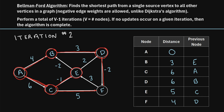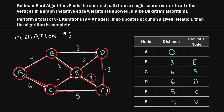Moving on to node E. E to B: five minus two is three — already equal to three, so no update. E to D: five plus two is seven — not smaller than six, so no update. Moving on to node F. F to E: F has a distance of four, so four plus three is seven — not smaller than five, so no update. That completes our second iteration of the Bellman-Ford algorithm.